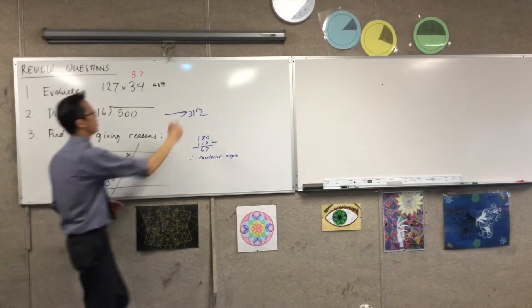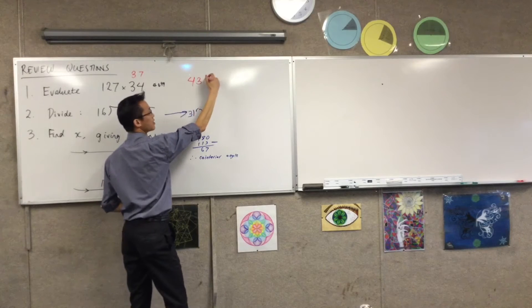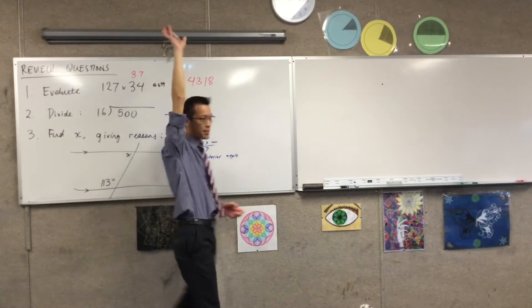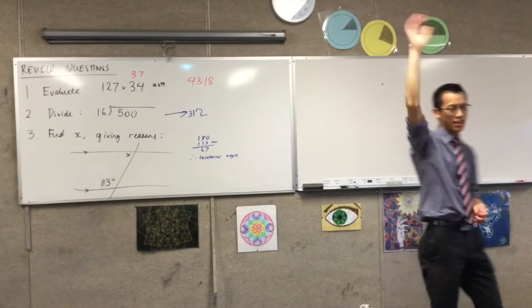Christian. 4,300 and? 18. 4,318. Hands up if you agree. What do you think? Okay thank you hands down.